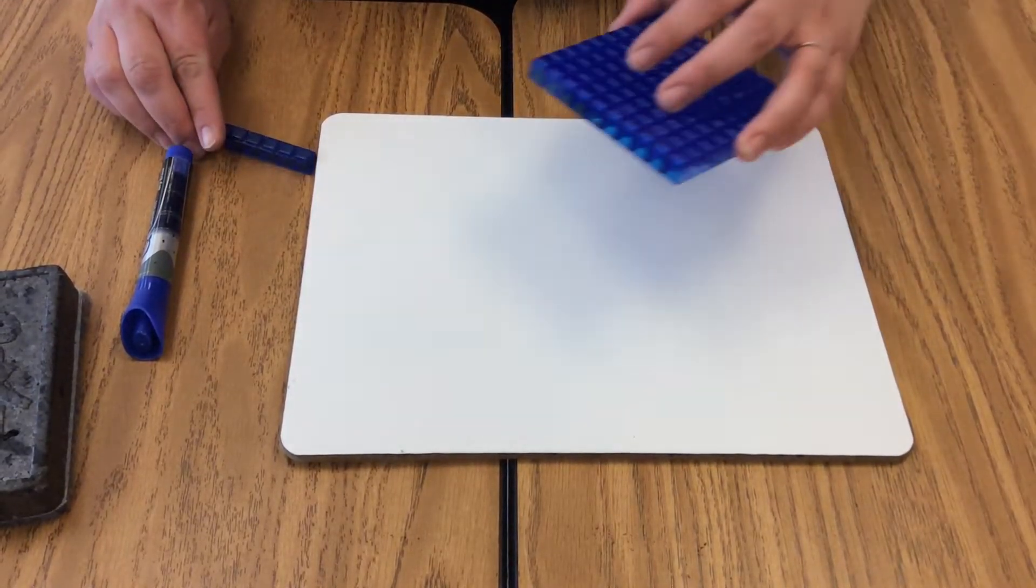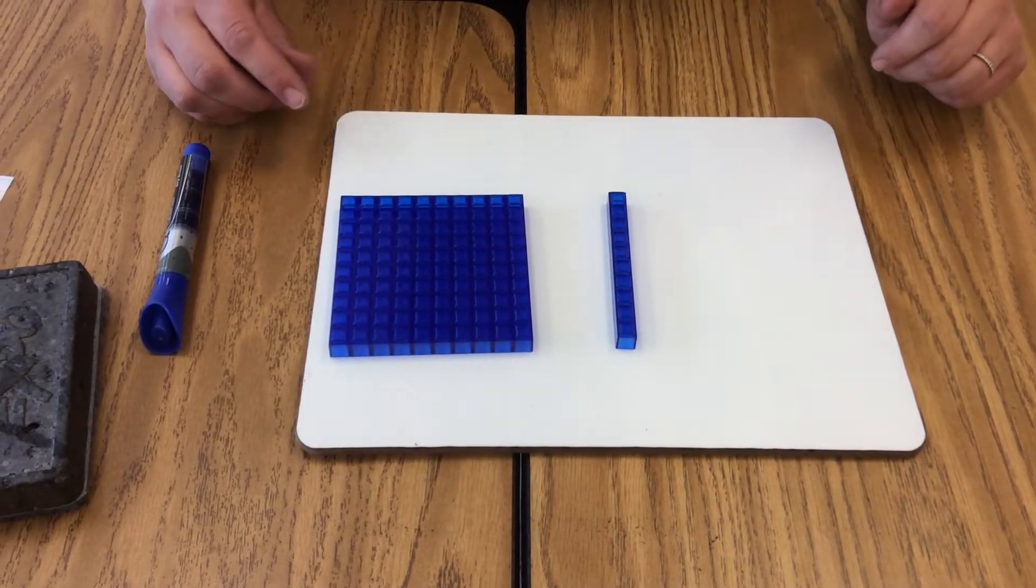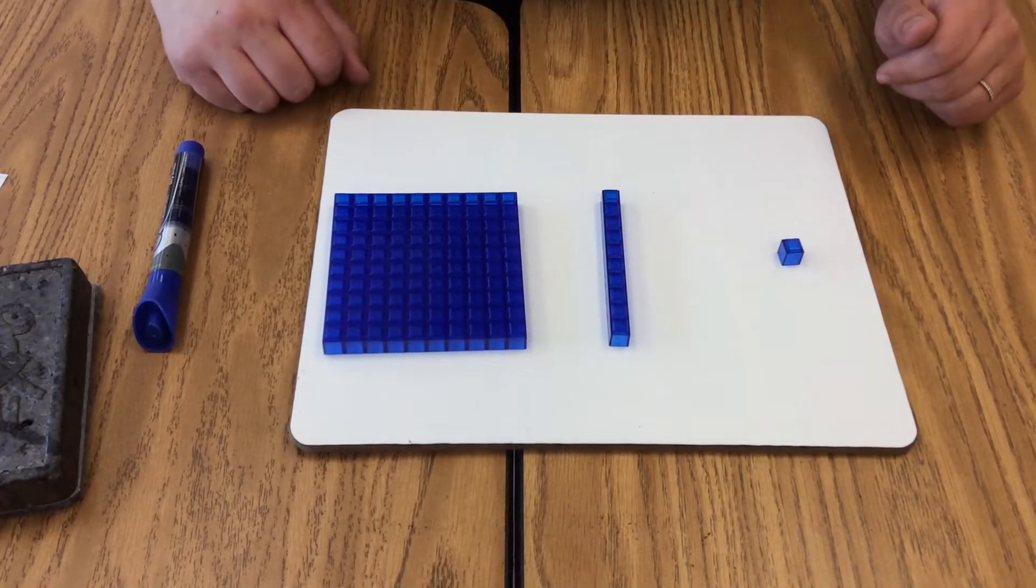In the Student Toolkit, students have a flat representing 100, a rod representing 10, and a unit representing 1.